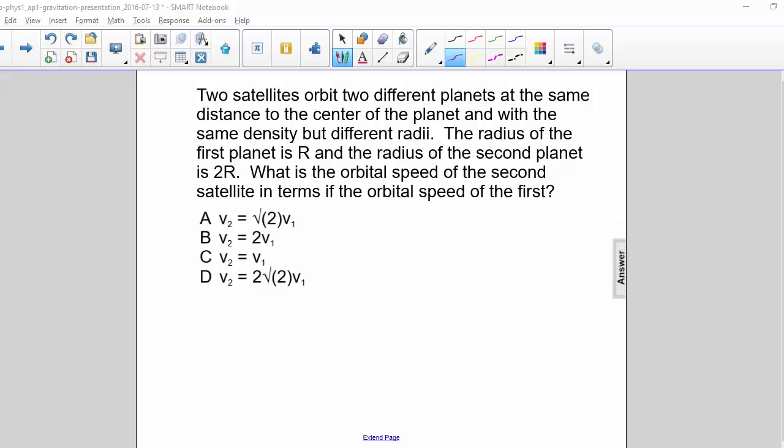Two satellites orbit two different planets at the same distance to the center of the planet and with the same density but different radii. The radius of the first planet is r and the radius of the second planet is 2r. What is the orbital speed of the second satellite in terms of the orbital speed of the first?